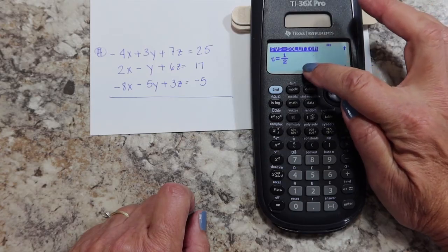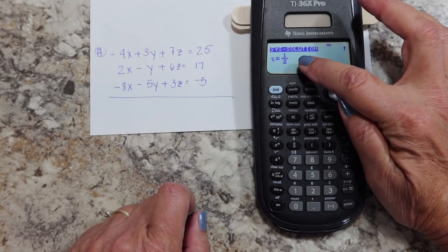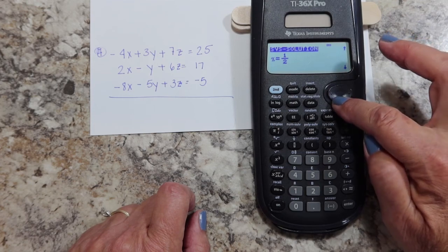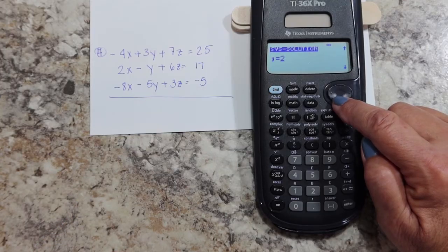Now if you look, all it's showing you right here is the X answer. Where are the rest of your answers? All you have to do is scroll down. X is one half, you hit the scroll button, Y is two, hit the scroll button again.